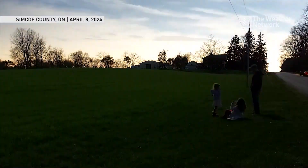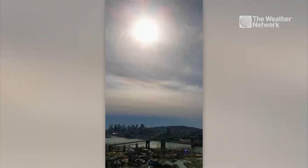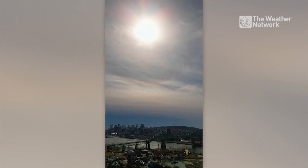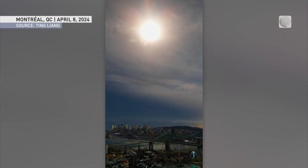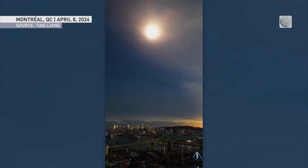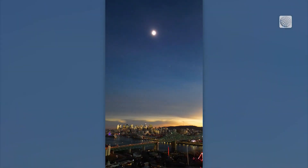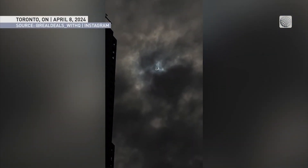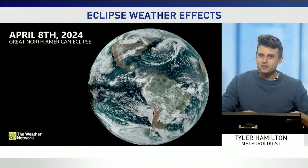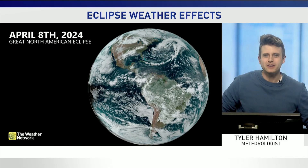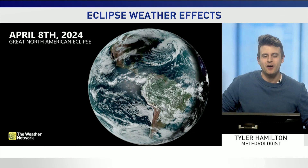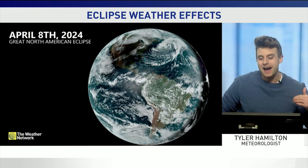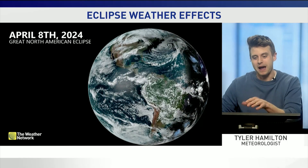Here is the total solar eclipse from the ground — obviously an out-of-this-world experience. Satellite imagery also caught the solar eclipse, and it also had quite a profound impact on our weather patterns and weather maps.